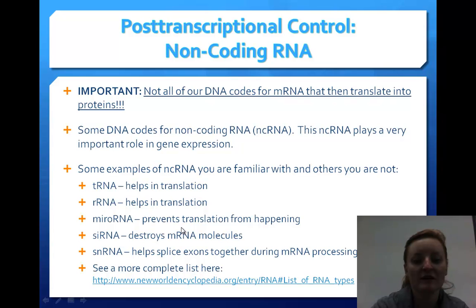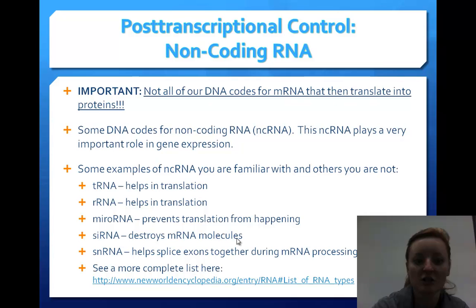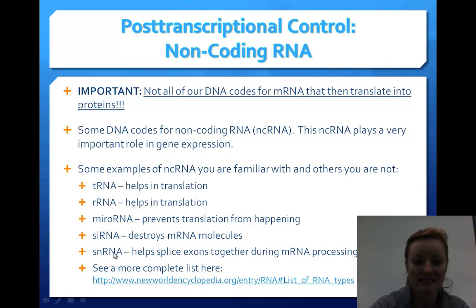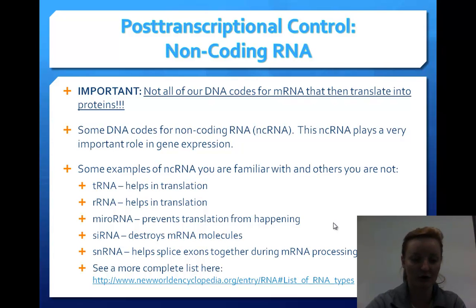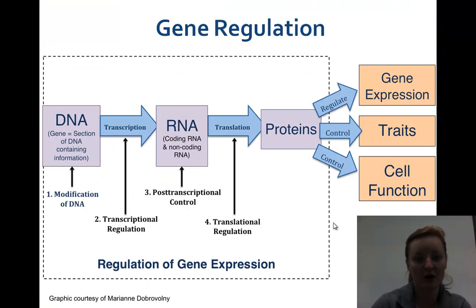MicroRNA prevents translation from happening. siRNA destroys mRNA molecules — when we're done with translation, the siRNA destroys them. There's also snRNA, which helps splice exons together during mRNA processing, taking all those exons and gluing them together. Those are all non-coding RNAs.